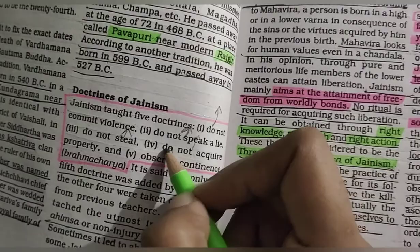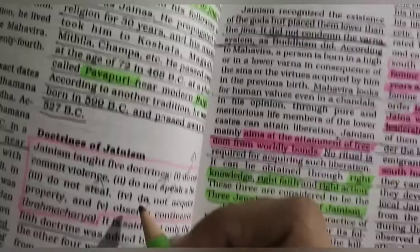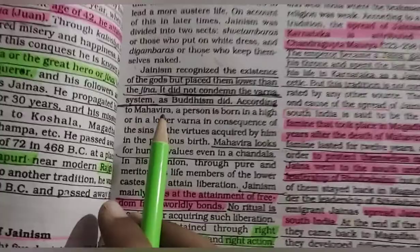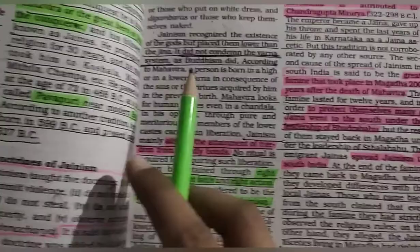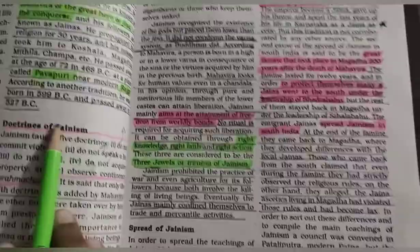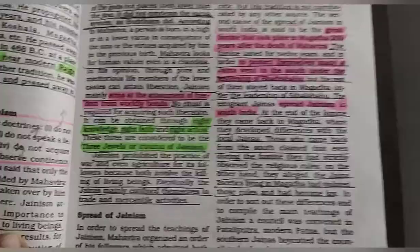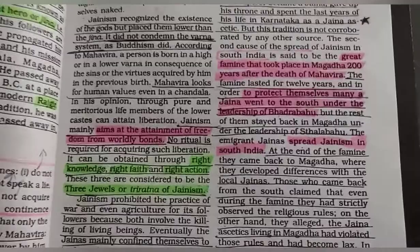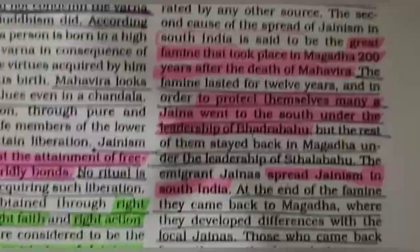These doctrines were mainly supported by traders and they spread in parts of north India, Gujarat, Tamil Nadu, Karnataka and everywhere. Jainism followers had a path of salvation called Kaya Klesh, and it prescribes Kaya Klesh as the path of salvation, as desires of the body are the root cause of bondage.